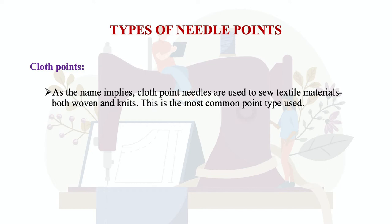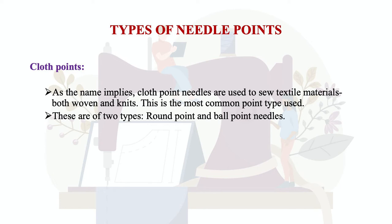There are different types of needle points used for stitching different types of fabric. The first is the cloth point. Cloth point needles are used to sew textile materials such as woven fabrics or knits — this is the most common point type used for sewing. There are two subtypes: round point and ball point.